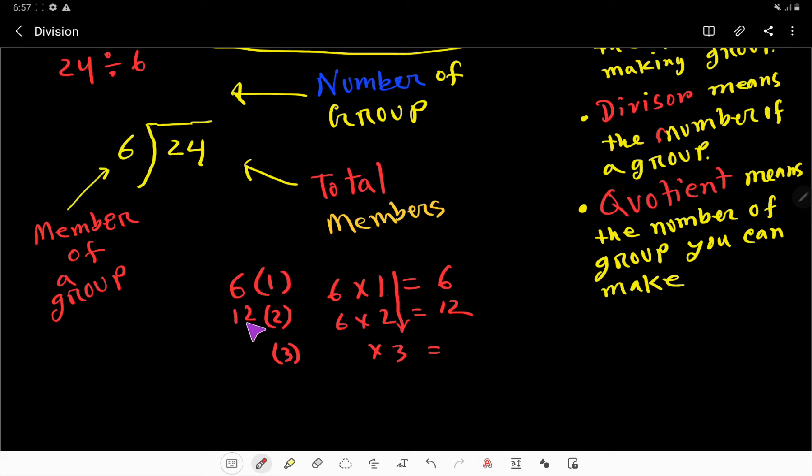Then 6 times 3, what will be the result? 6 times 3, the result will be - with this 12 you just need to add 6, that is 18. So 6 times 4...